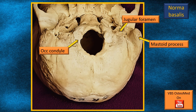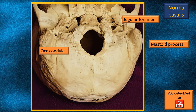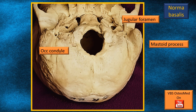The mastoid process is seen at the periphery of this part. At the edges of the foramen magnum are two occipital condyles — the right and the left. In this view, they marginally encroach upon the borders of the foramen magnum by a few millimetres. Lateral to these occipital condyles is the jugular process of the occipital bone, which contributes to the posterior part of the jugular fossa and the jugular foramen.